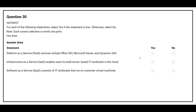Question number 30. For each of the following statements, select yes if the statement is true, otherwise select no. The first statement is: Platform as a Service includes Office 365, Microsoft Intune, and Dynamics 365. The correct answer is no. The second statement is: Infrastructure as a Service enables users to build server-based IT workloads in the cloud. The correct answer is yes. The third statement is: Software as a Service consists of IT workloads that run on customer virtual machines. The correct answer is no.